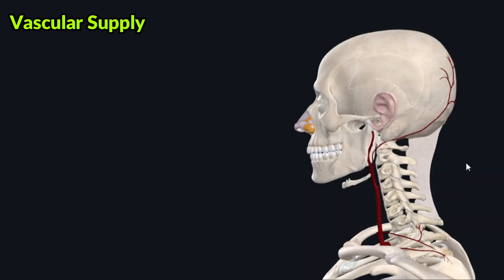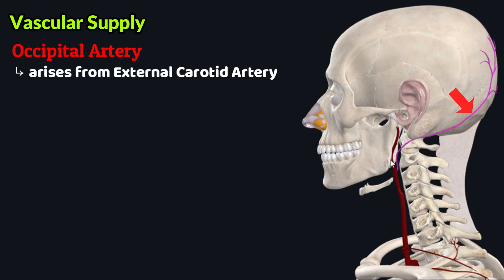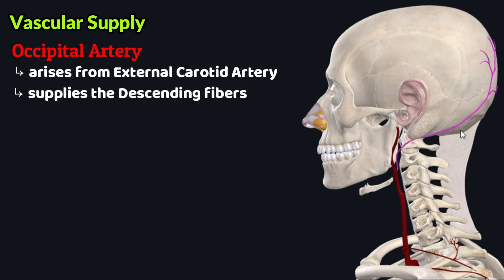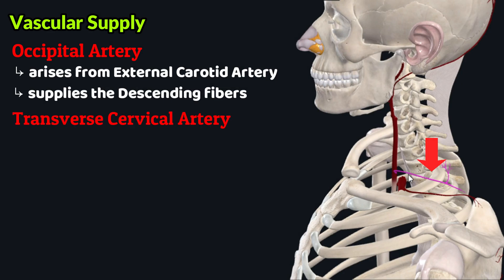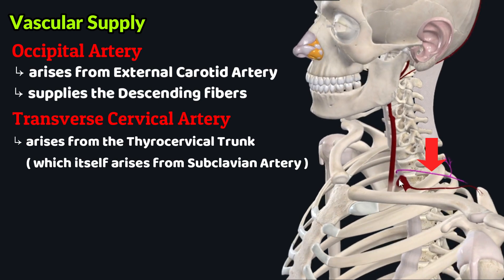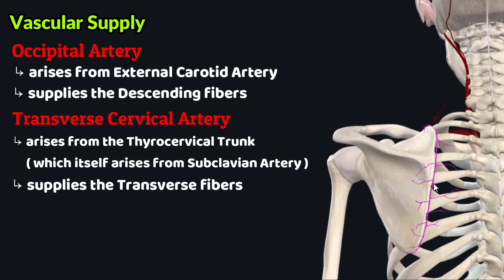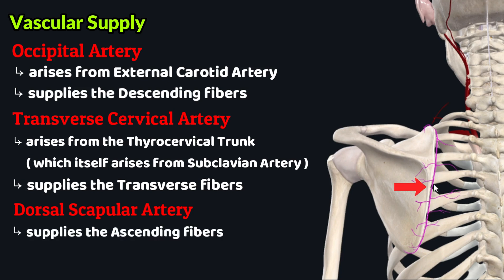Now let's look at the vascular supply of the trapezius muscle. The three groups of fibers are supplied individually by different arteries. The occipital artery, which arises from the external carotid artery, supplies the descending or superior group of fibers. The transverse cervical artery, which arises from the thyrocervical trunk, which then arises from the subclavian artery, supplies the transverse or middle group. The dorsal scapular artery supplies the ascending or inferior group of fibers.